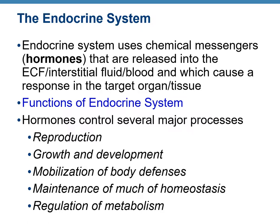The following are the functions of the endocrine system. First, reproduction — all of you know testosterone, the male sex hormone, and estrogen, the female sex hormone. Reproduction is not possible without these hormones. Growth and development: we have a special growth hormone that helps in the elongation of bones and in building up muscle mass.